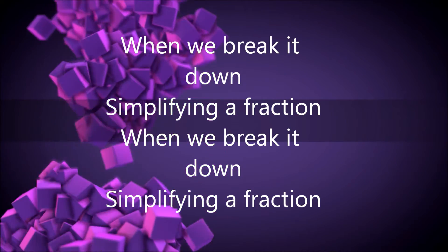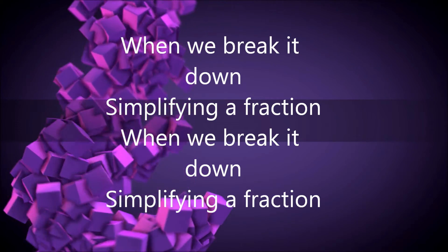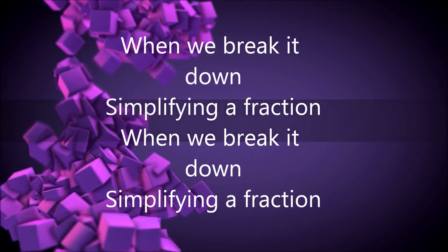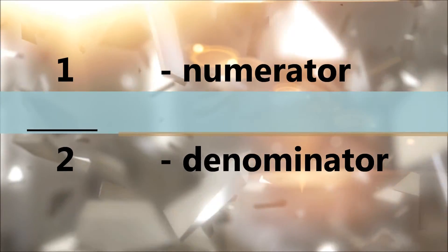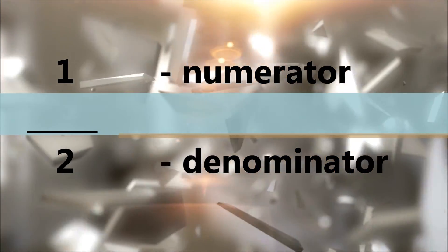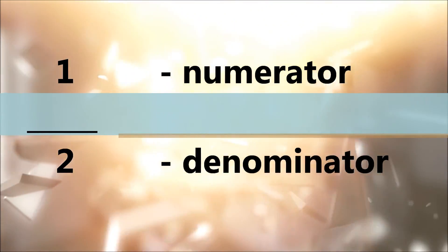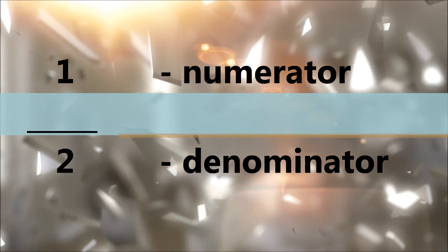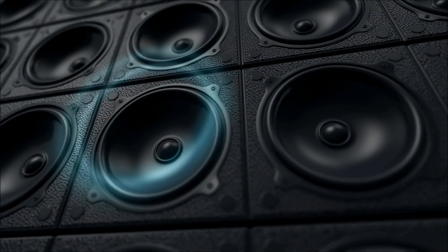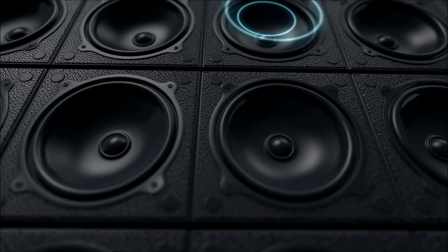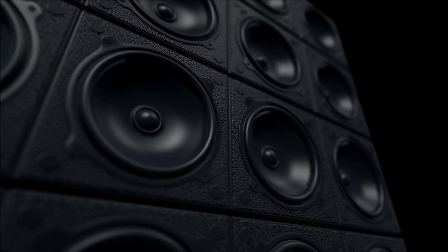Simplifying a fraction — when we break it down. Simplifying a fraction. Numerator high, nay-nay in the sky. Denominator low — break it down, now let yourself go. Numerator high, nay-nay in the sky. Denominator low — break it down, now let yourself go. And everybody, and people — you've got to find the HCF, so let yourself go.